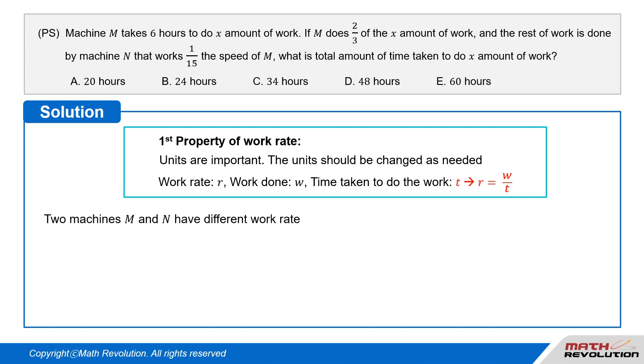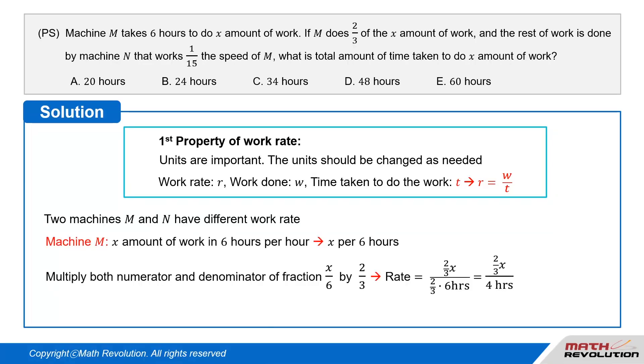We have two machines, M and N, with different work rates. Machine M takes 6 hours to do X amount of work, so the rate equals X/6 per hour, which equals X per 6 hours. But we're looking for 2/3 of work.